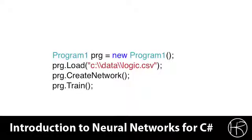The main method starts out easy enough. We instantiate a new instance of program 1. Then I call a load method that will actually load the CSV file. This loads the CSV file and creates the training data. Then I call create network, which is going to create the neural network. And then I call train, which is going to actually train the neural network.